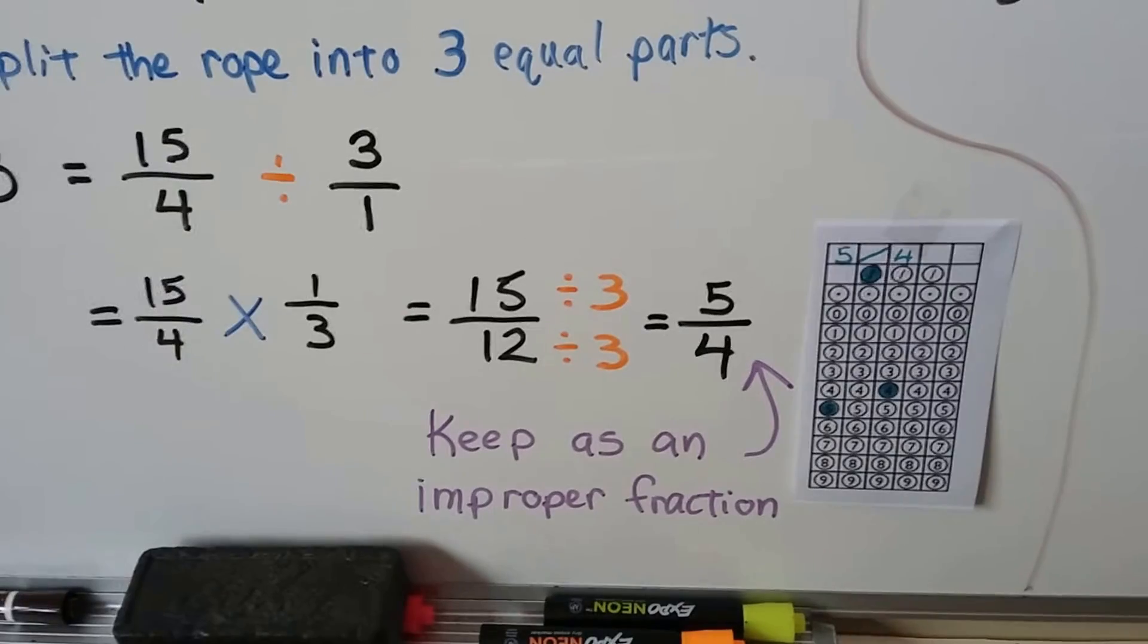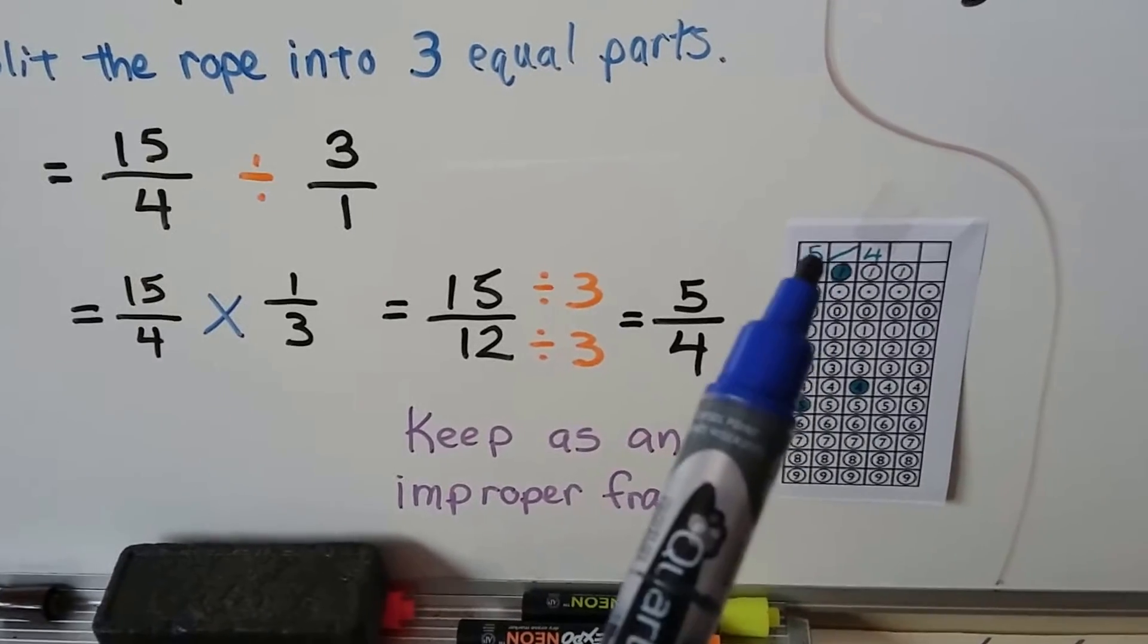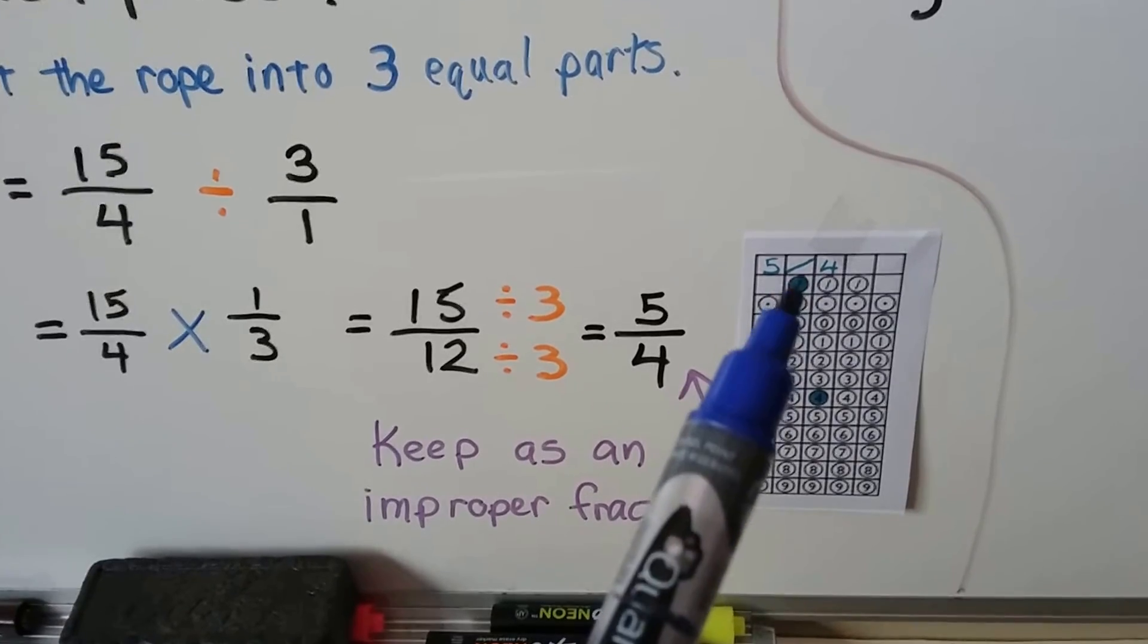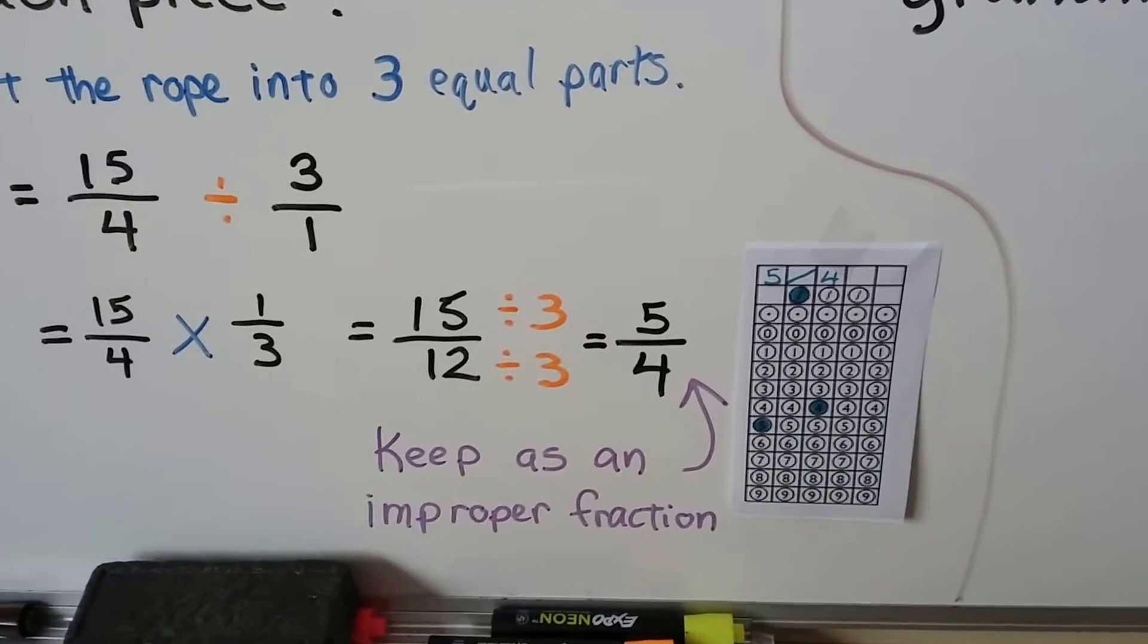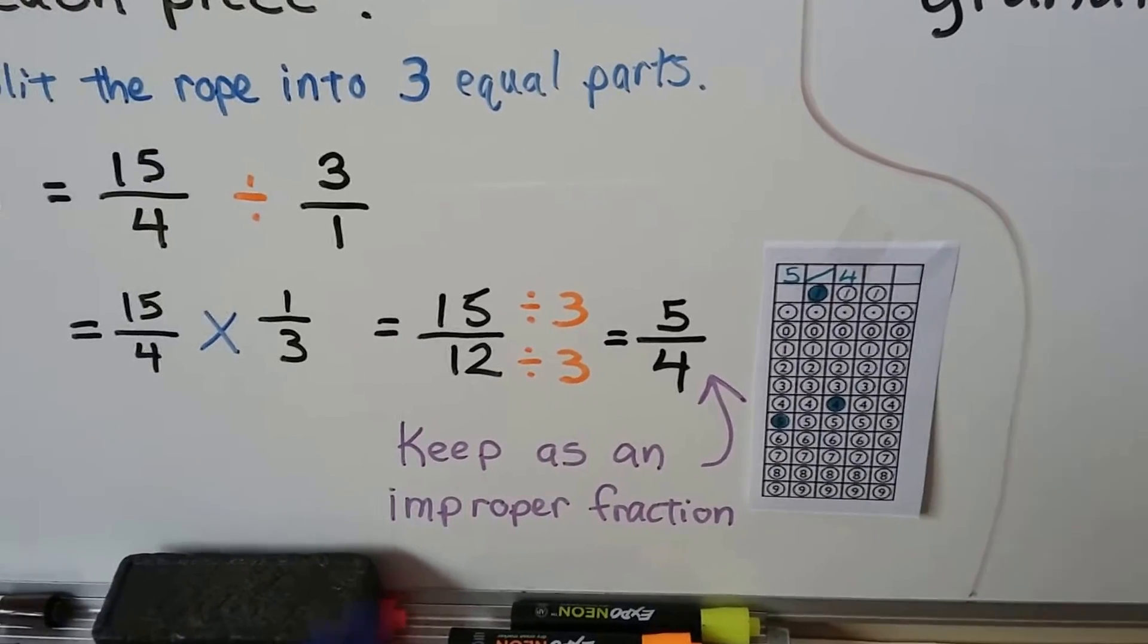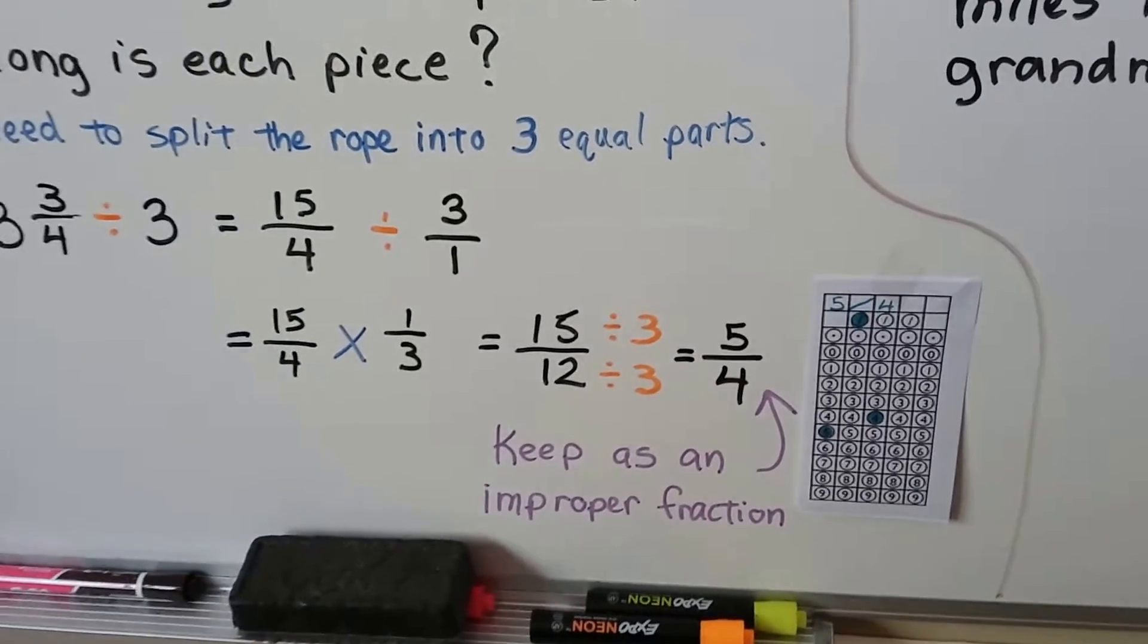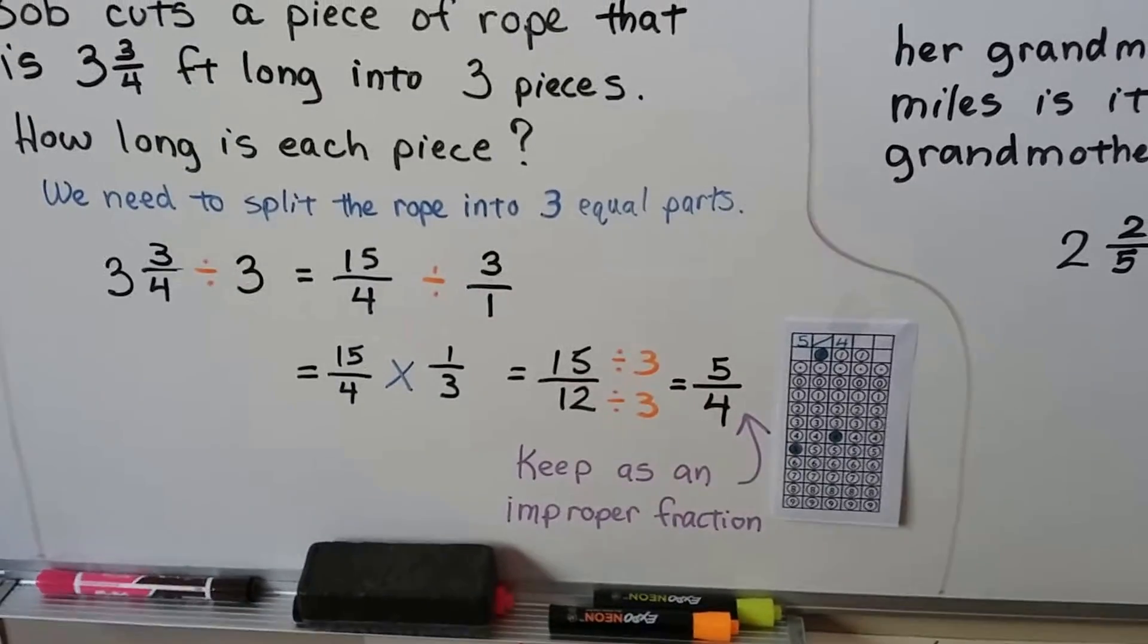Now it's reduced as far as it can go. We keep it as 5/4s and write 5, a slash, and a 4. We fill in the 5 circle, the slash circle, and the 4 circle. Leave the rest blank. So be careful if your improper fraction can be reduced.